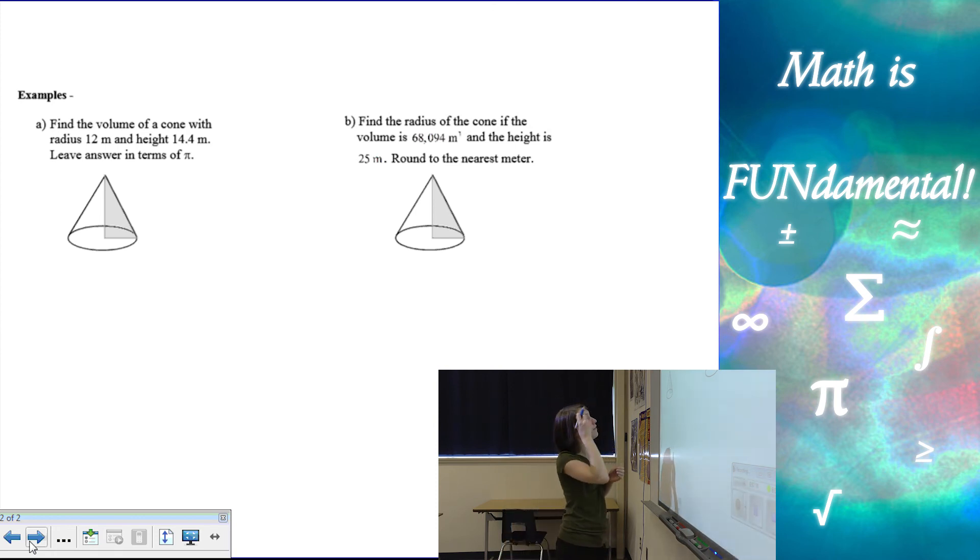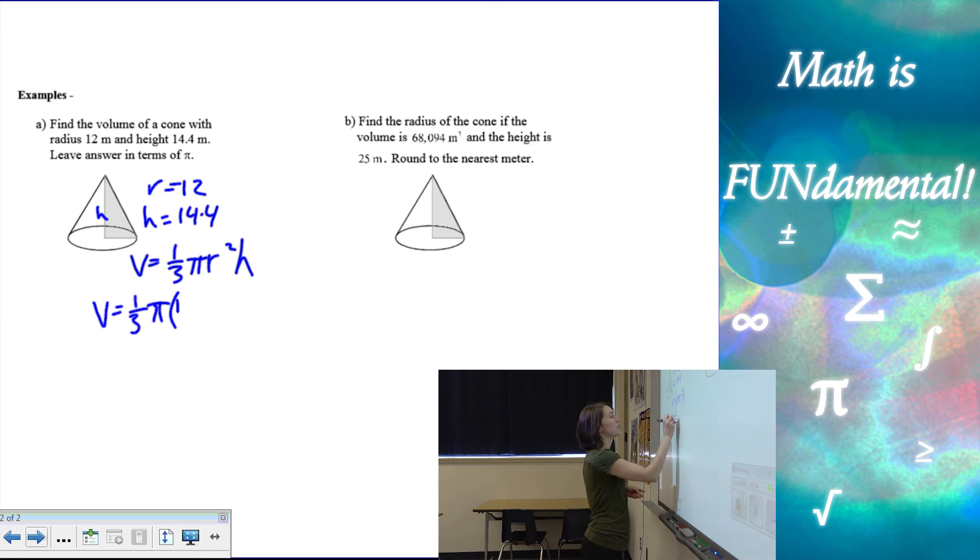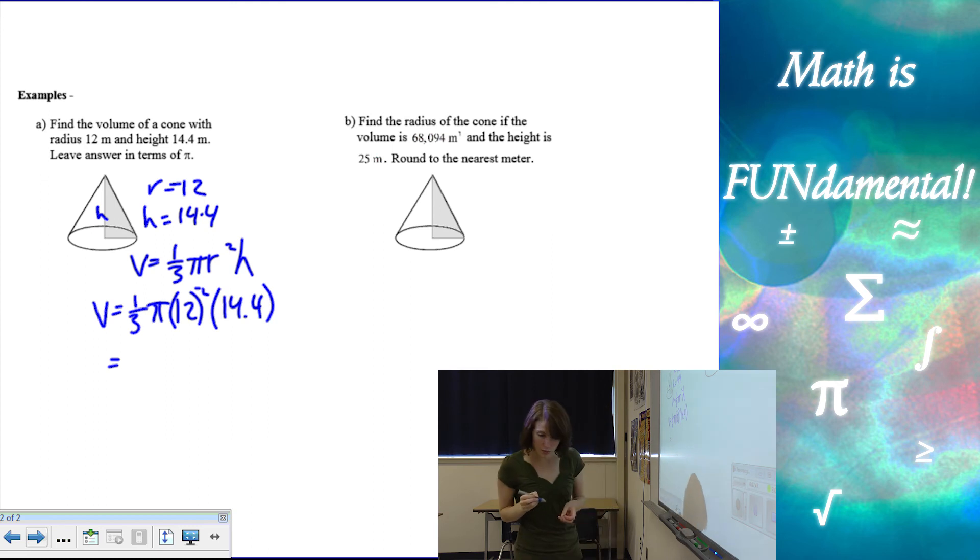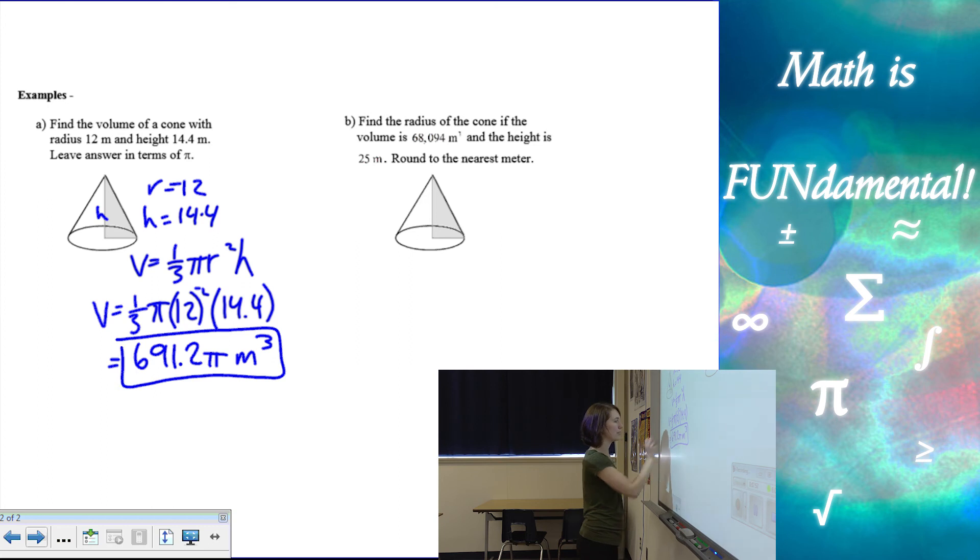All right, so our first cone, we want to find the volume. If we know the radius is 12 meters and the height is 14.4, so volume is 1/3 area of base, which is π r², times the height of the cone, which goes straight up from the vertex down to the center of the base. And we want to leave answers in terms of π. All right, so volume is 1/3 times π times 12² times my height, which is 14.4. And then if we multiply all of those together, we get 691.2π meters cubed.